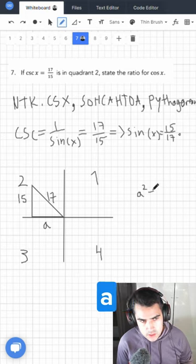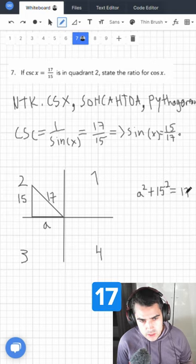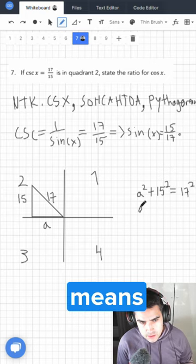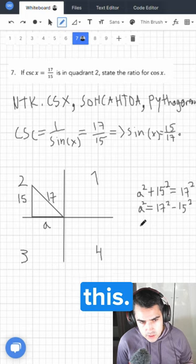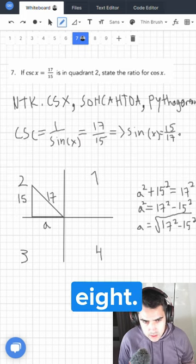We know that a squared plus 15 squared is equal to 17 squared. That means a squared is equal to this. So a is equal to the square root of all of this, which is equal to 8.